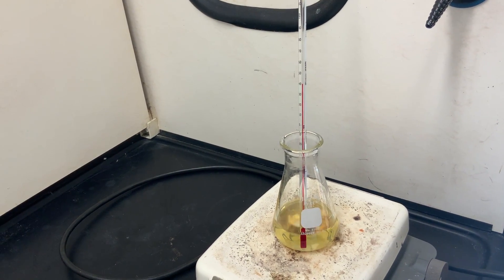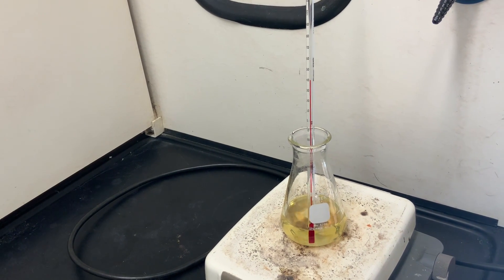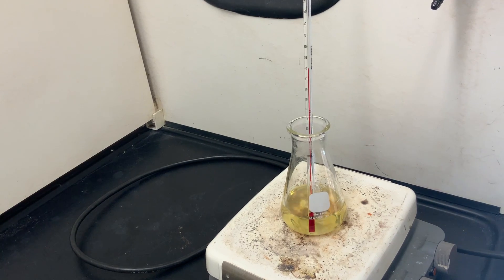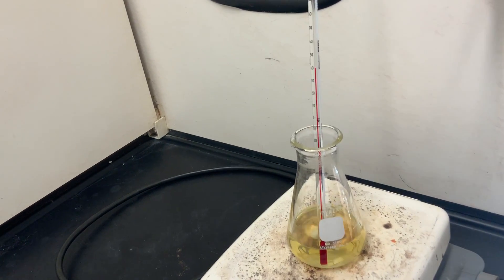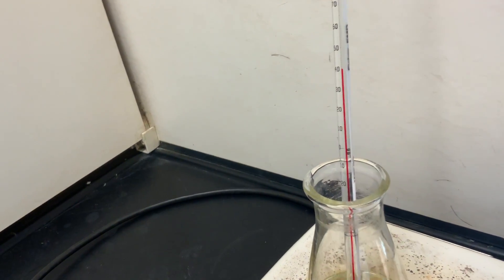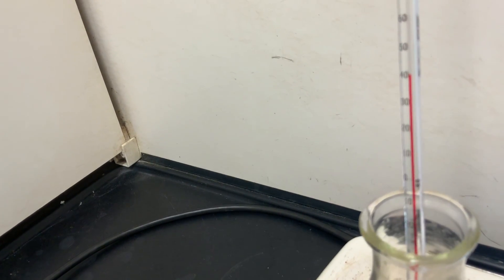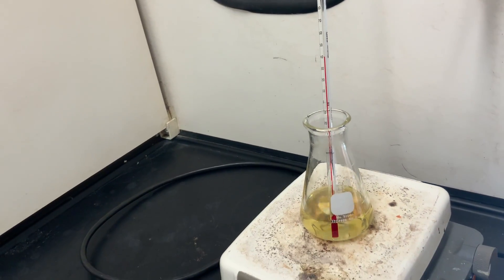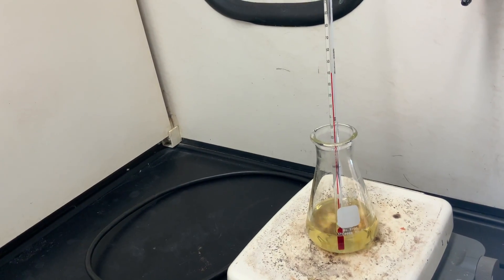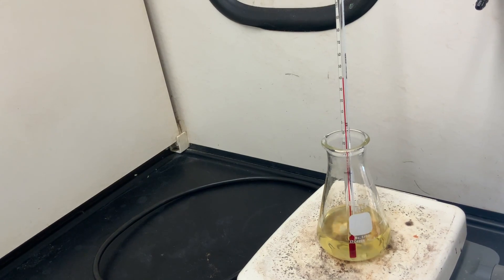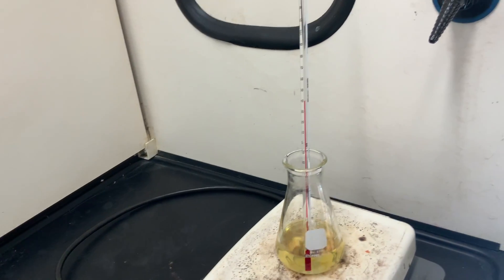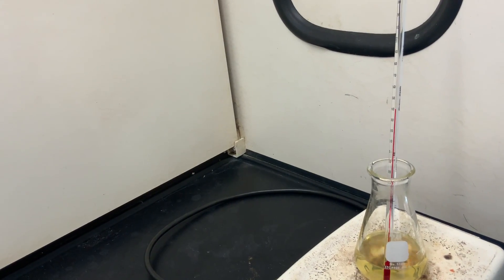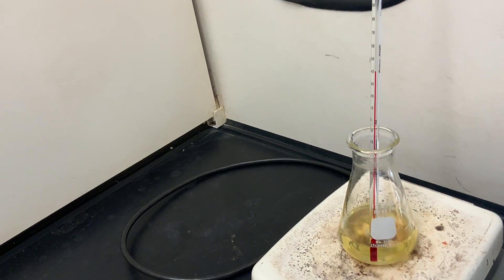Now that we have been heating our vegetable oil and sodium ethoxide mixture for about 30 minutes at about 40 degrees Celsius, we're ready to allow the mixture to separate into two layers. We'll remove the mixture from the hot plate.